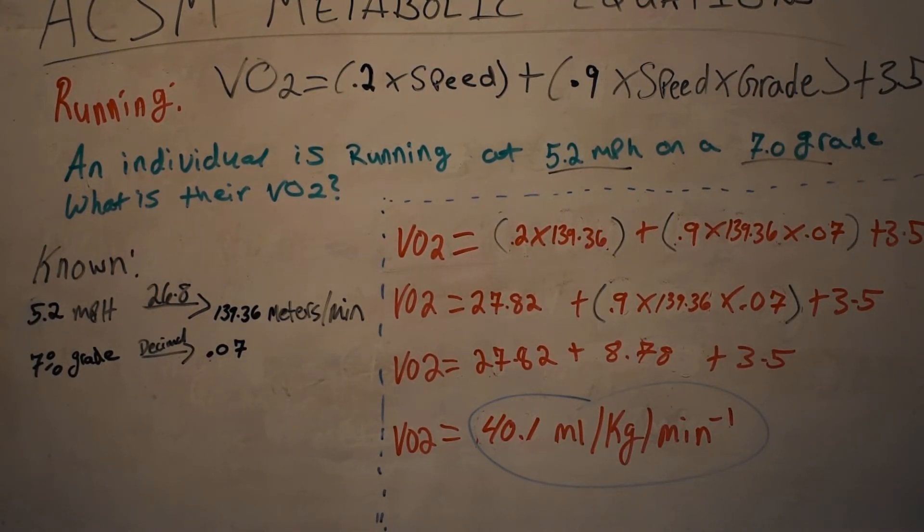After you've done that, the first thing you're going to want to do is just take this equation and rewrite it with your known values. So in other words, VO2 which is the value I'm solving for, equals 0.2 times 139.36—that's my first part, notice the parentheses—plus 0.9 times 139.36 times 0.07, and then of course the plus 3.5 at the end.